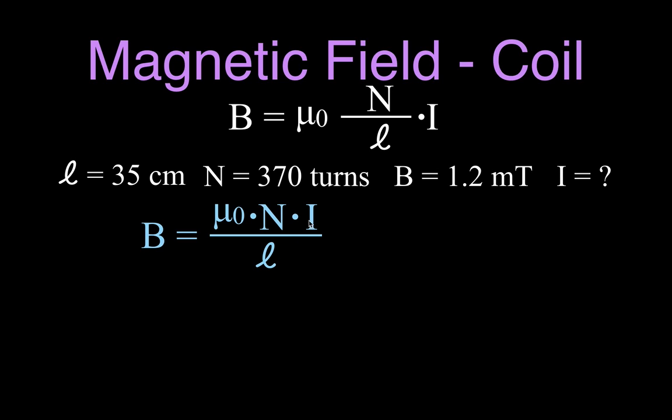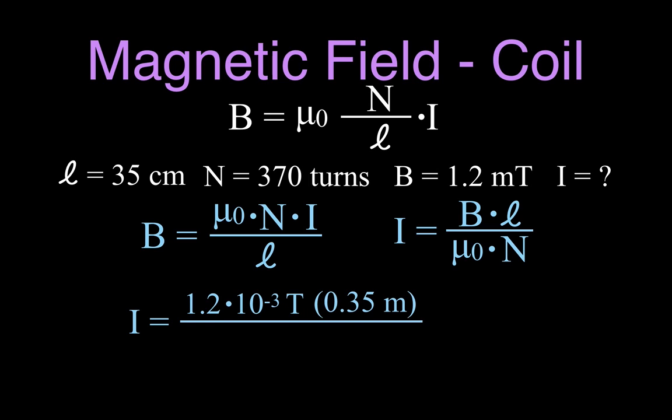Now this time I want to solve for I, and I'm going to cross multiply. So then I have B times ℓ on the left-hand side, and I'm solving for I. So then I'm going to just divide both sides of the equation by μ₀ times N. And I come up with that the current would be equal to B times ℓ divided by μ₀ times N. And I can just plug the values in, the current. And then I have my magnetic field strength is 1.2×10⁻³ milliteslas.